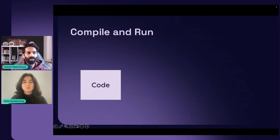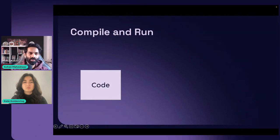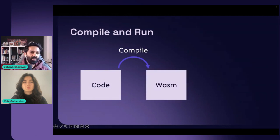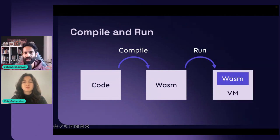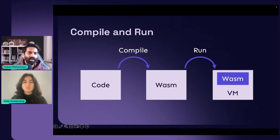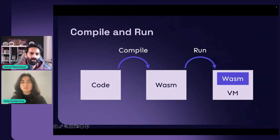So how does WebAssembly really work? You write code in any language — Python, Rust, TypeScript — and it compiles to a WASM format. You get a .wasm file, and this .wasm file can be run in any place that has a runtime supporting it — essentially a virtual machine that can support a WASM runtime.